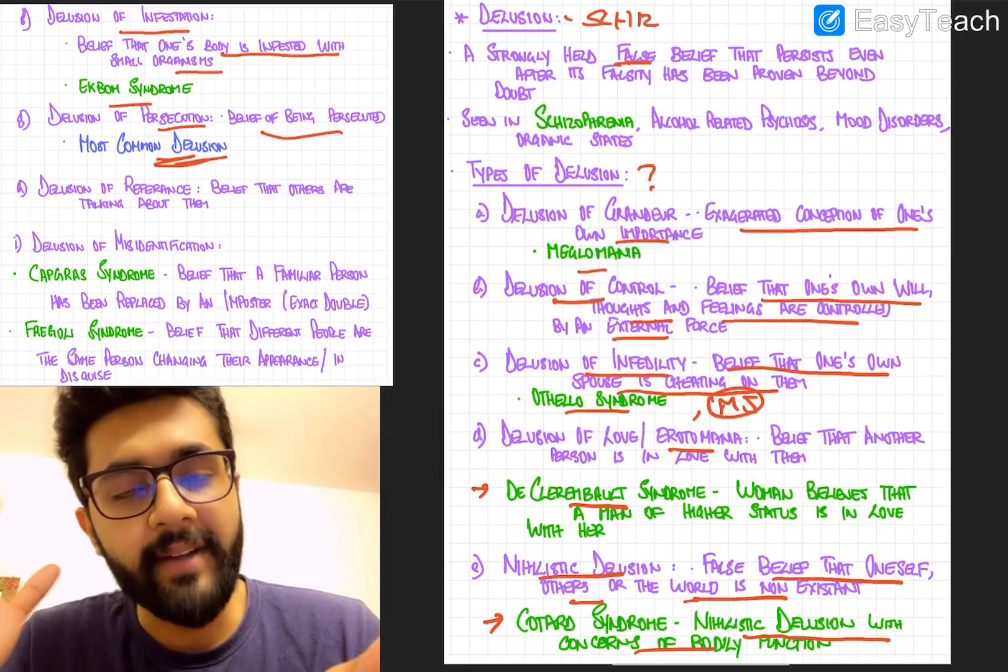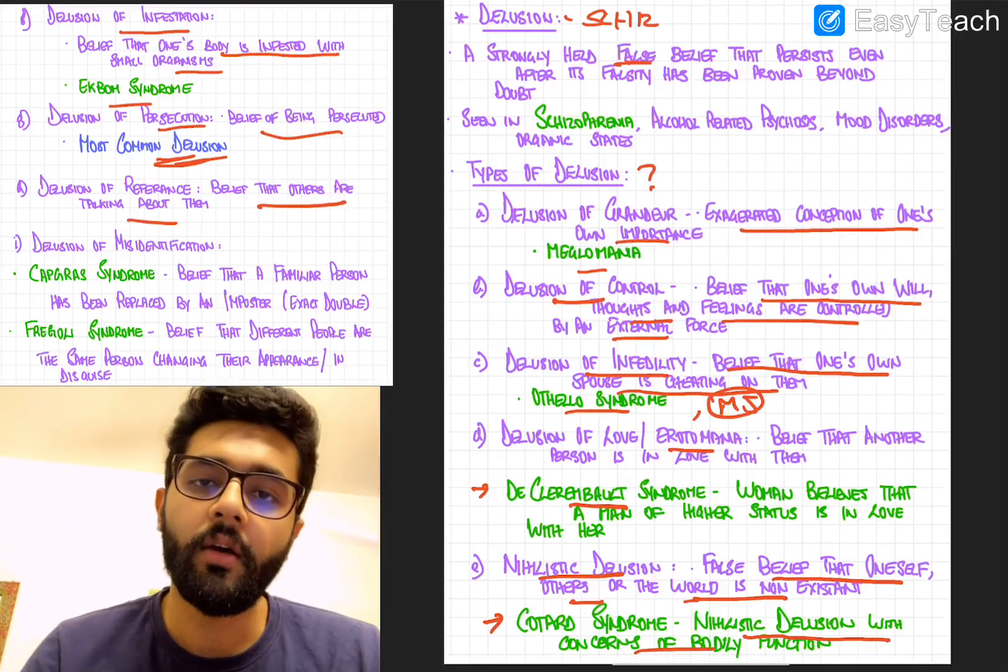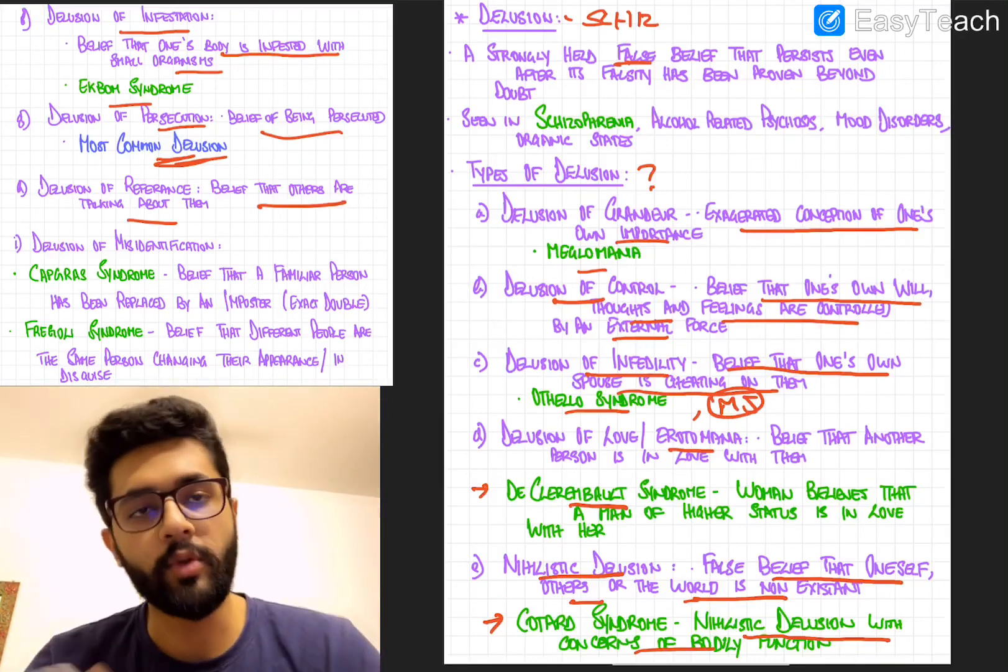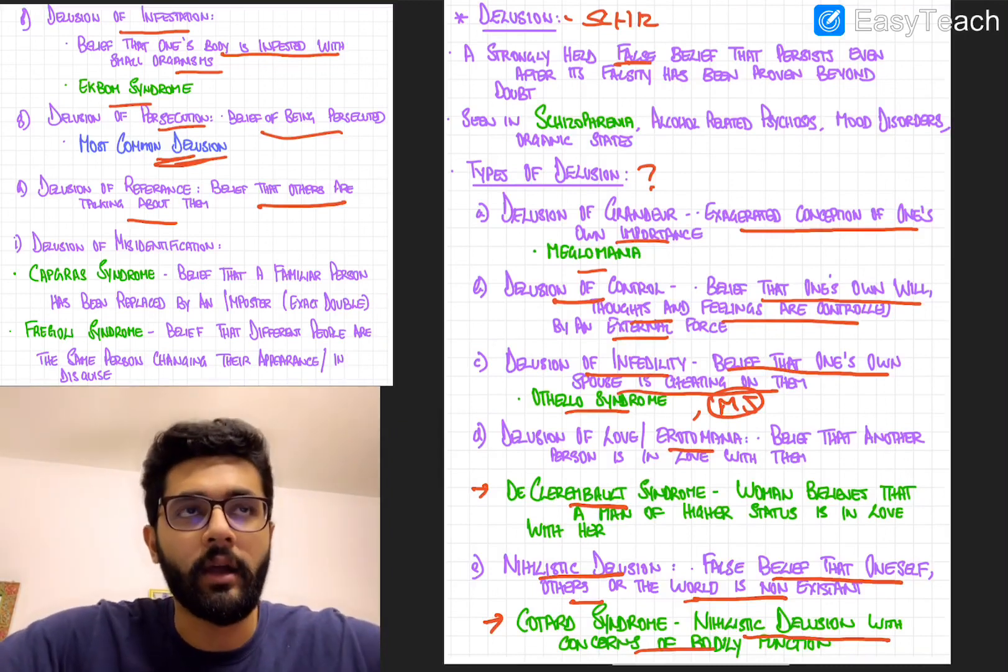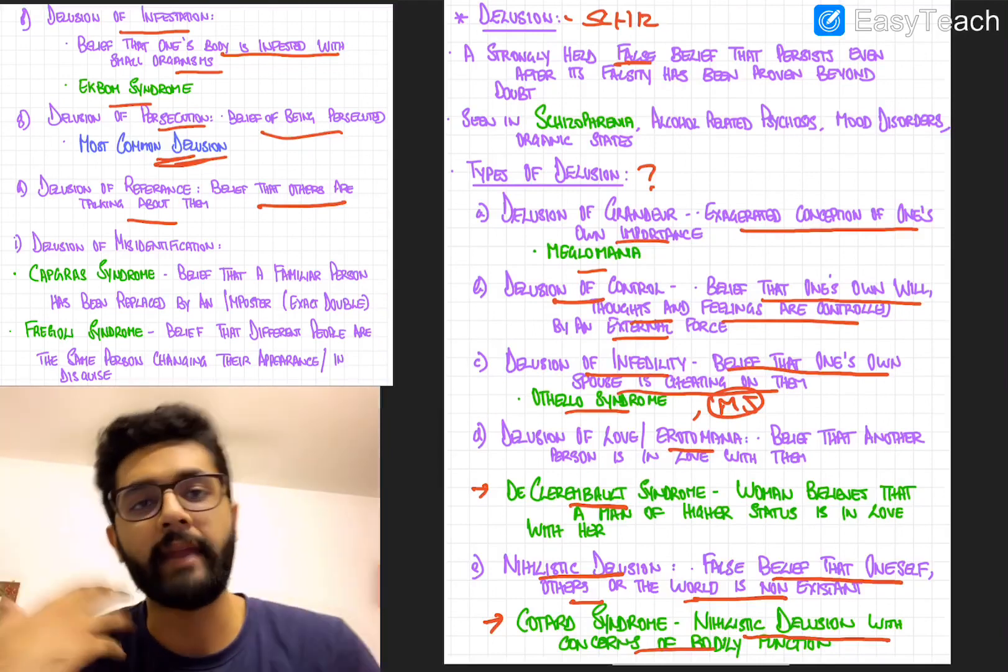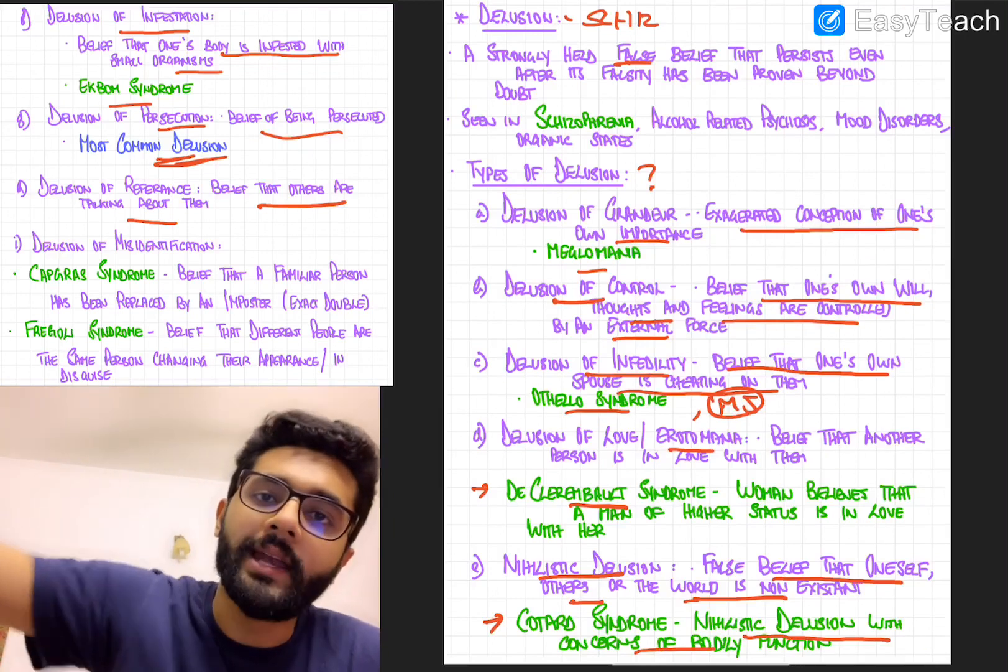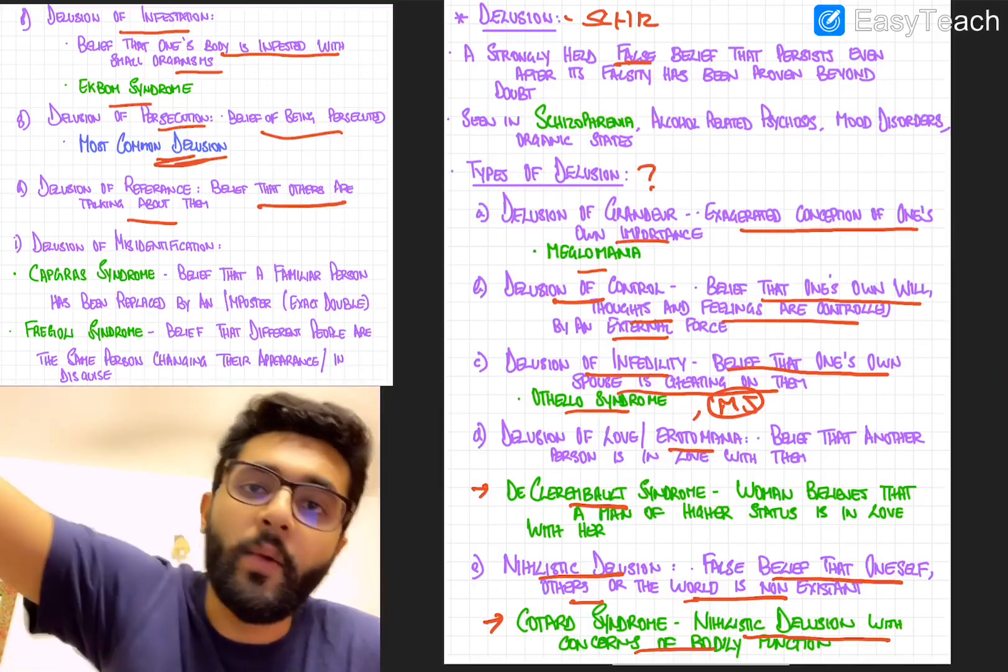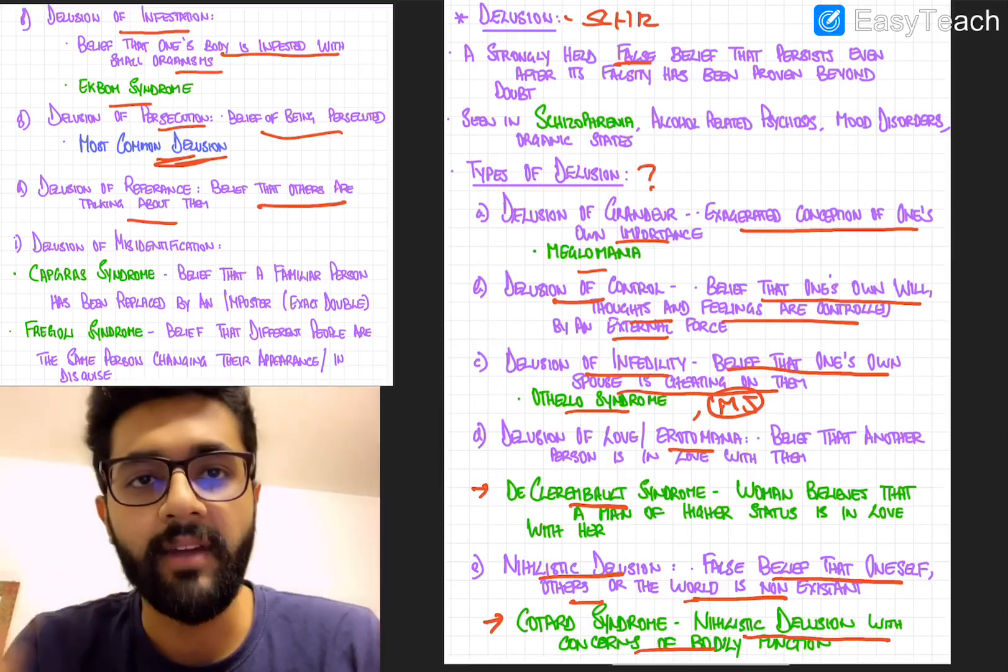Next, you have delusion of reference and it is a belief that others are talking, thinking or reacting about a certain individual. So it's a delusion where you feel that everything happening around you is in reference to you. So it's a delusion of being referred all the time. So if this individual sees two totally unrelated people laughing in another corner of the room, they would assume that they're laughing about him or her. So that is a delusion of reference.